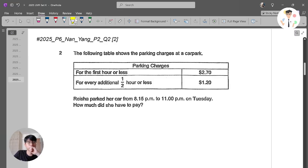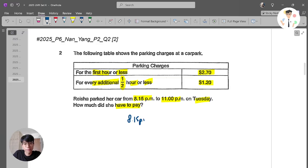For the first hour or less, $2.70, for every additional half an hour or less, you're supposed to pay $1.20. Now, Reisha parked her car from 8:15 to 11 PM on Tuesday. How much did she have to pay?